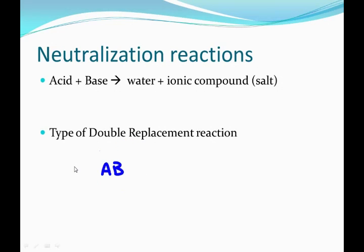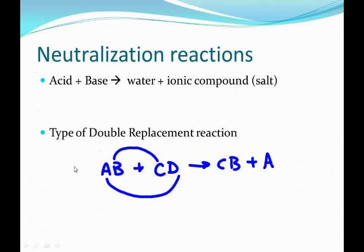I have AB and CD. I want to swap partners. I want A to pair up with D and C to pair up with B because I'm thinking about, I'm swapping my positives. So A and C are swapping places, so I end up with CB plus AD. There we go.